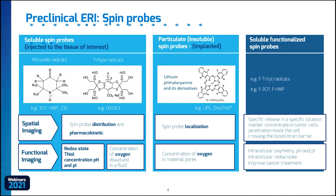Liquid spin probes are more suitable for imaging, and we can distinguish two types: the trityls, which are suitable for imaging oxygen concentration, and the nitroxides, which are very useful for imaging redox state. Nowadays, many researchers are also focusing on multi-functional spin probes, which have great potential due to unique properties such as increased sensitivity, measurement of more than one microenvironment parameter, accumulation in specific regions, or the ability to cross or not cross the blood-brain barrier.